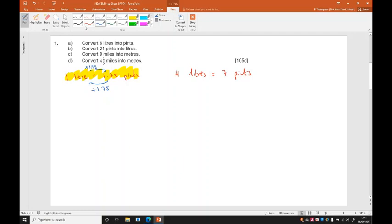So, actually then, 6 liters. I'm going forward this way, so multiply by 1.75. So if you just do 6 times 1.75, you get 10.5, so 6 liters is about 10.5 pints.